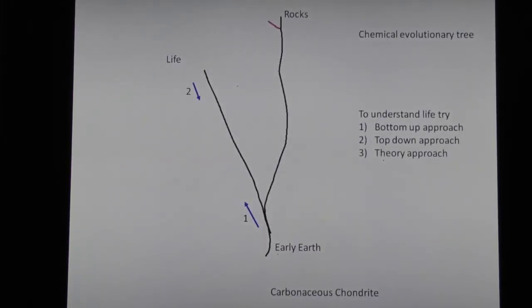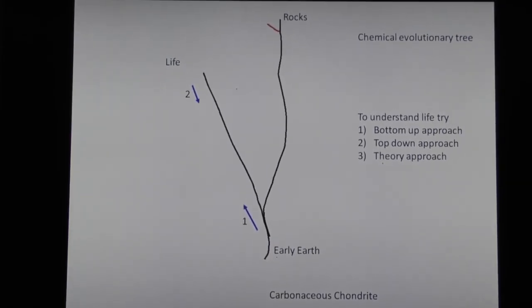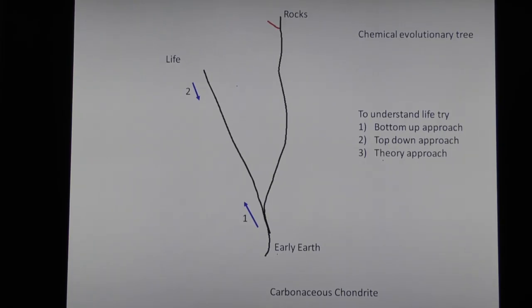Here's a chemical evolutionary tree. At one time, the earth didn't have living things on it — it was just rocks. But rocks and life have a common ancestor. This carbonaceous chondrite predates the earth, that's why it's below it. The first approach is a bottom-up approach: how do you get non-living chemicals to become living? The other approach, common in engineering, is reverse-engineer it — start with living things and try to work backwards. These two do not meet in the middle; they're a long ways from the middle yet. The third technique is a theory approach.